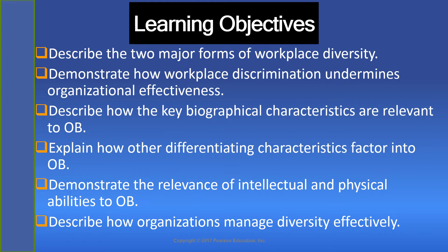After studying this chapter you should be able to achieve the following objectives. Number one is describe the two major forms of workforce diversity. Then you should be able to demonstrate how workplace discrimination undermines organizational effectiveness. At the third point, you would be able to describe how the key biographical characteristics are relevant to organizational behavior.